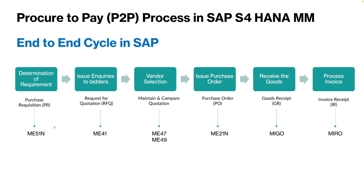We'll create a purchase requisition, then create some RFQs for some bidders, then maintain those quotations and compare them to derive our bidder on which we place the purchase order. Then we'll create a purchase order on that vendor, then a goods receipt, then an invoice receipt. We'll also see what financial documents get posted during GR and invoice receipt, and how the stock of the material gets updated.